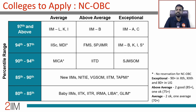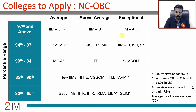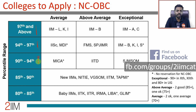Now we look at what if you have NC-OBC reservation — where do you stand, which colleges should you apply to? The structure is pretty much similar to the general category, with one key difference: the top range is now 97 and above instead of 99 plus, the next range shifts to 94 to 97 instead of 95 to 99, and then there is a category of 90 to 94. Pause the video, look at the table, and see where your scores fall.